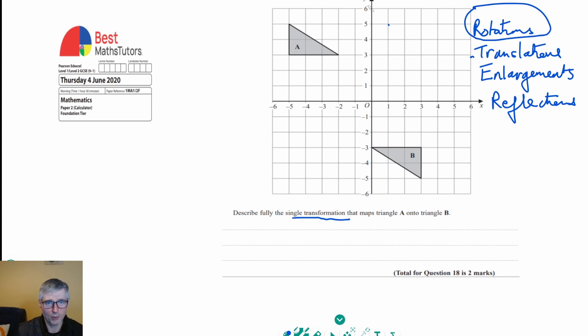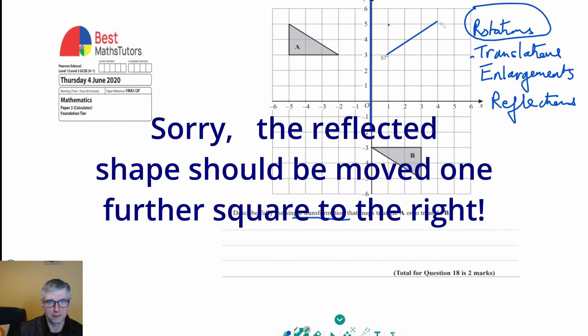A reflection, if I was to reflect A, then for example, I could reflect it in this line here, which would be the Y axis, and I would get something like that, if I reflected it in that line.